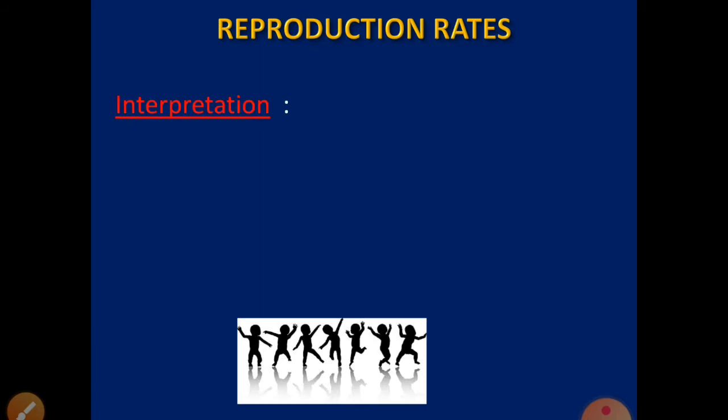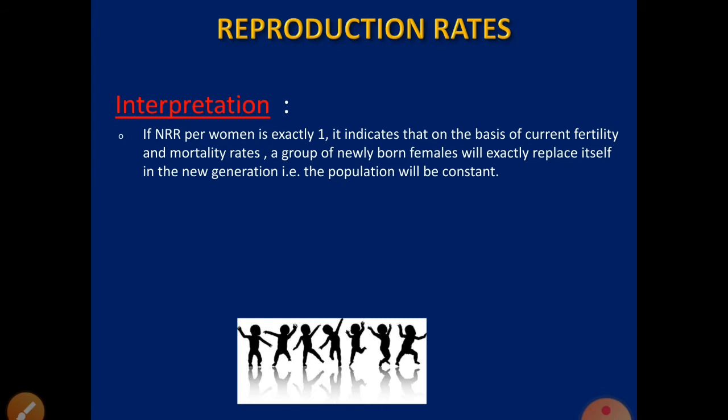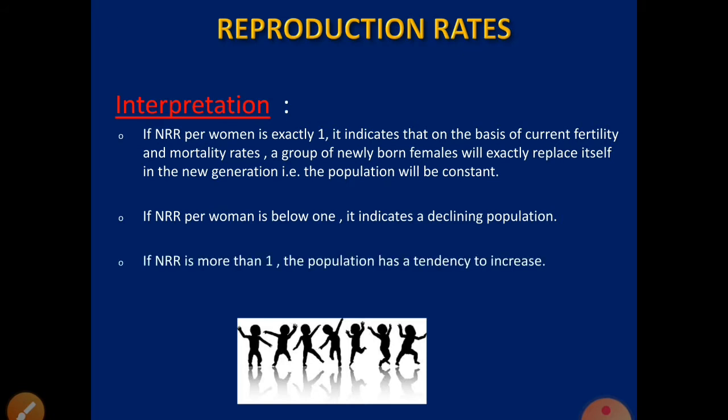The interpretations of NRR are as follows. First, if NRR per woman is exactly 1, it indicates that on the basis of current fertility and mortality rates, a group of newly born females will exactly replace itself in the next generation — that is, the population will be constant. Second, if NRR per woman is below 1, it indicates a decreasing population. Third, if NRR is more than 1, the population will increase.